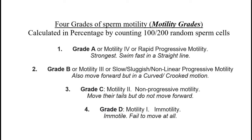Grade D, or motility 1, is immotility — these sperm are immotile and fail to move at all. The immotile sperms may either be dead or alive, which will be ascertained in the next test, known as the sperm viability test.